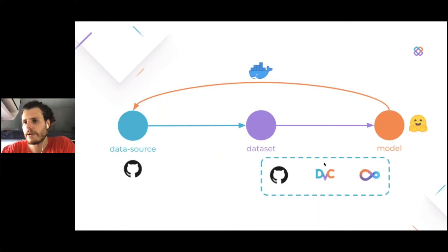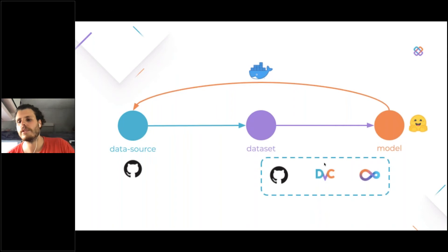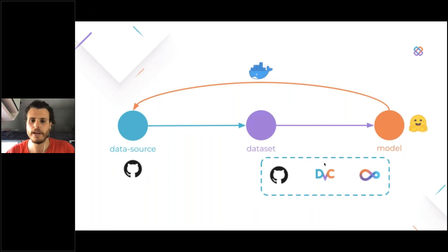The idea is that we are going to manage everything in a single repository. On the left we have the data source, which in this case would be the DVC repository, from which we are going to fetch issues with the title and labels assigned in order to build a dataset. We are going to use the tools I mentioned before — DVC and CML — to build this minimal MLOps workflow around GitHub Actions. We're fine-tuning a Hugging Face model, and at the end we are going to pack the model inside a Docker image that can be deployed anywhere, including a GitHub workflow that can automatically assign a label to an issue.